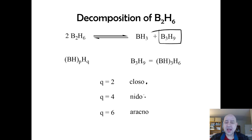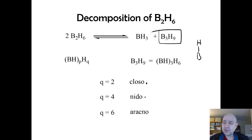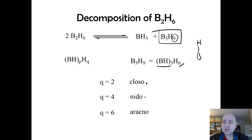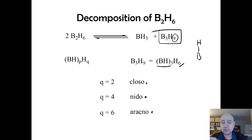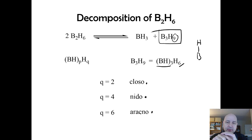The fewer hydrogens you have, the more closed your system. For B3H9, every boron has at least one terminal hydrogen — the BH unit — and we have six additional hydrogens. It turns out you can have two, four, or six additional hydrogens, giving the closo, nido, and arachno structures respectively. Fewer hydrogens means more boron-boron bonds and more connections to form spherical or closed structures.